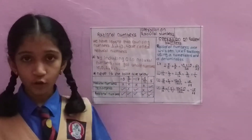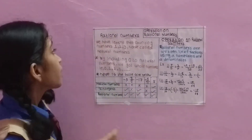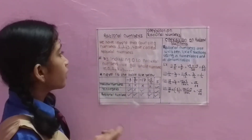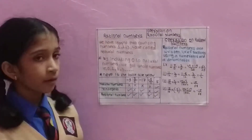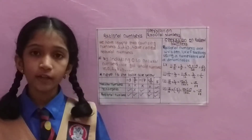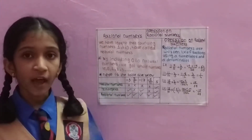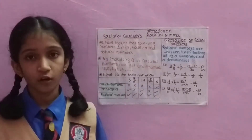What are rational numbers that we have learnt? We have learnt that the counting numbers like 1, 2, 3, 4 are called natural numbers.